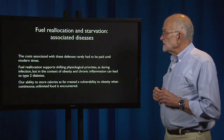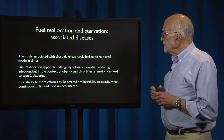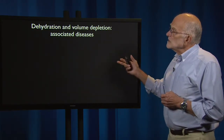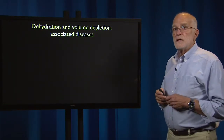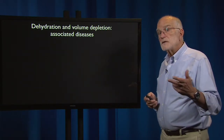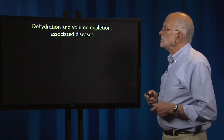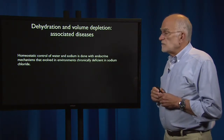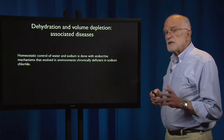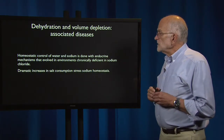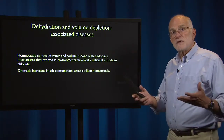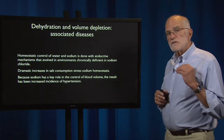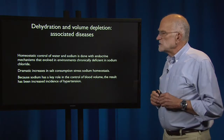Our ability to store calories as fat created a vulnerability to obesity when continuous unlimited food is encountered. Similar issues arise with dehydration and volume depletion — the mechanisms that regulate our water content also contain vulnerabilities. Homeostatic control of water and sodium is done with endocrine mechanisms that evolved in environments chronically deficient in sodium chloride, table salt. Dramatic increases in salt consumption stress the physiological systems that regulate sodium, and because sodium has a key role in the control of blood volume, the result has been an increased incidence of hypertension.